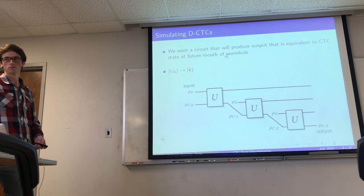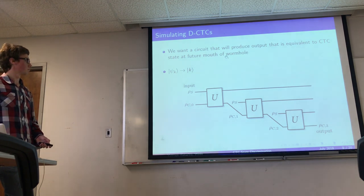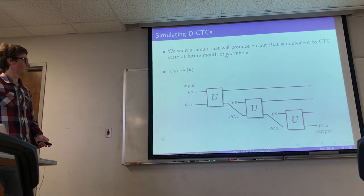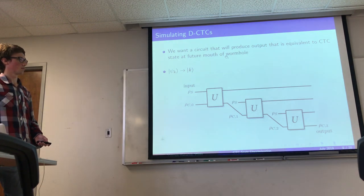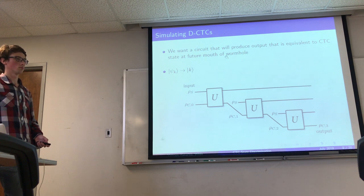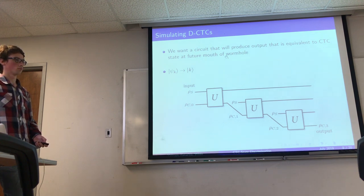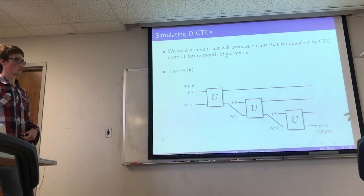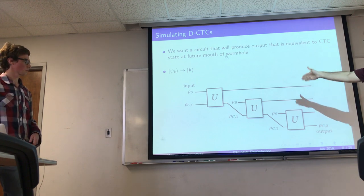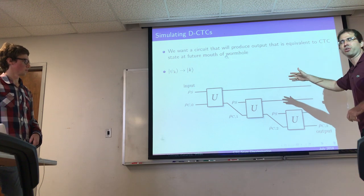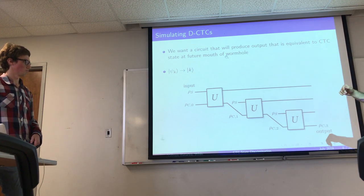A comment arises about potentially entangling all copies of ρ_s, but for state discrimination the assumption is multiple tensor product copies of the given state. It is also necessary to have the same channel at each iteration for convergence to a fixed point.